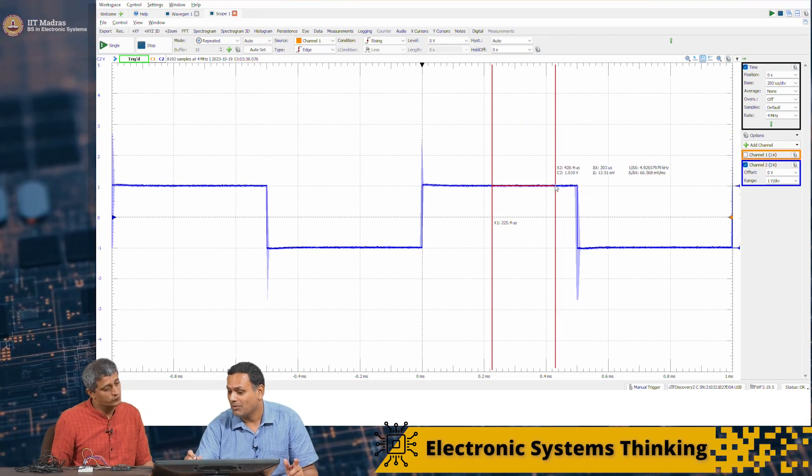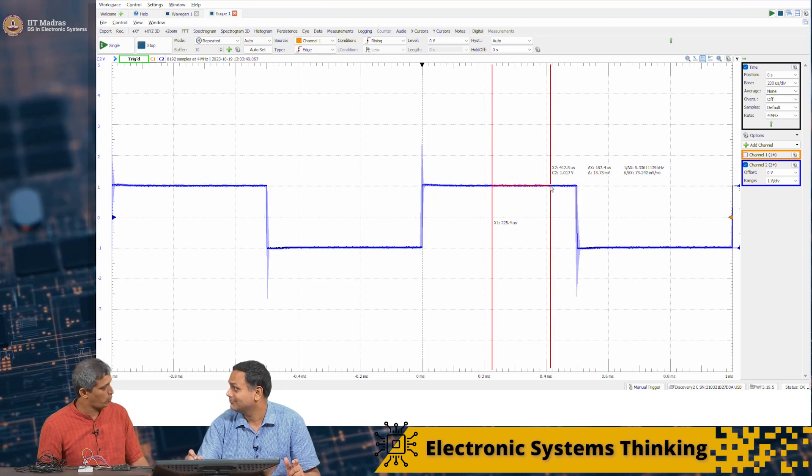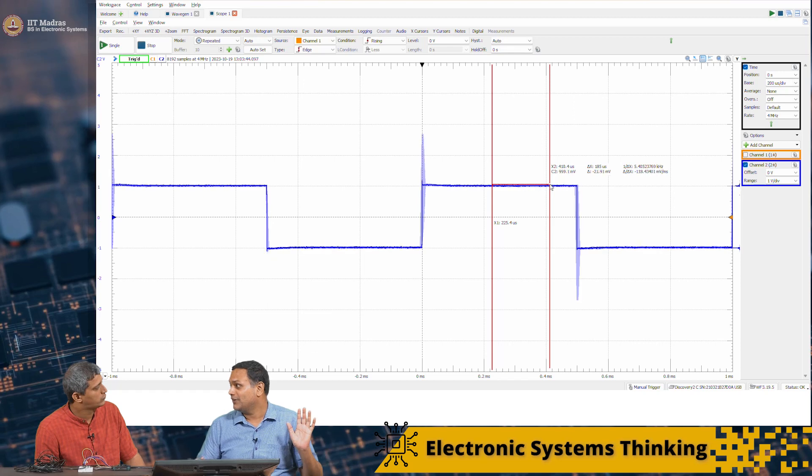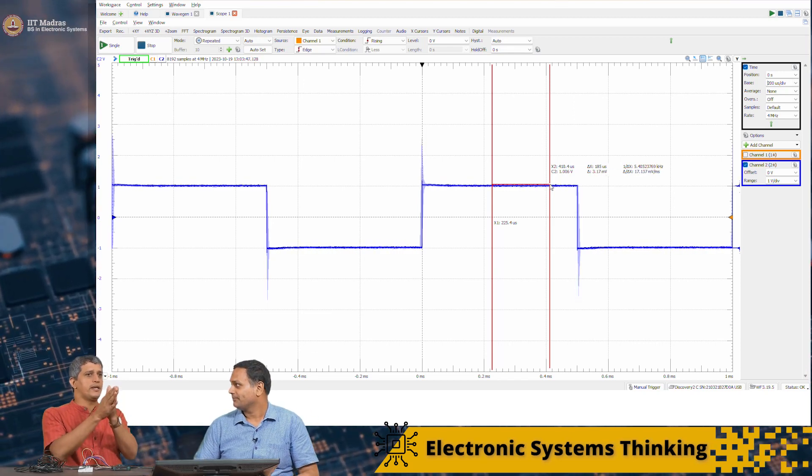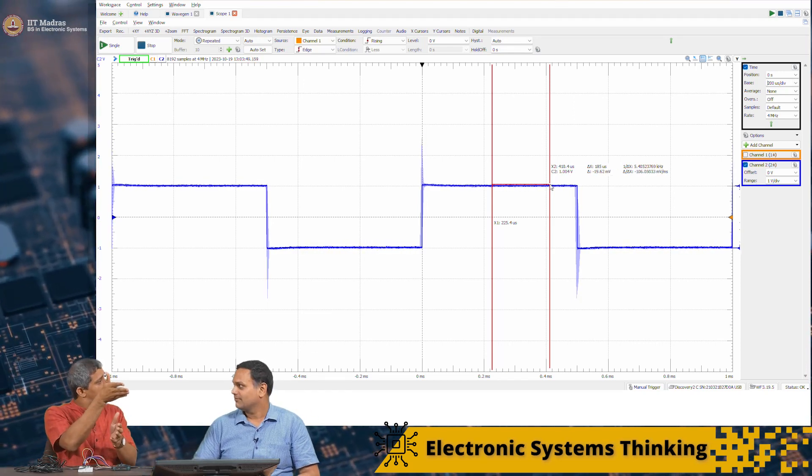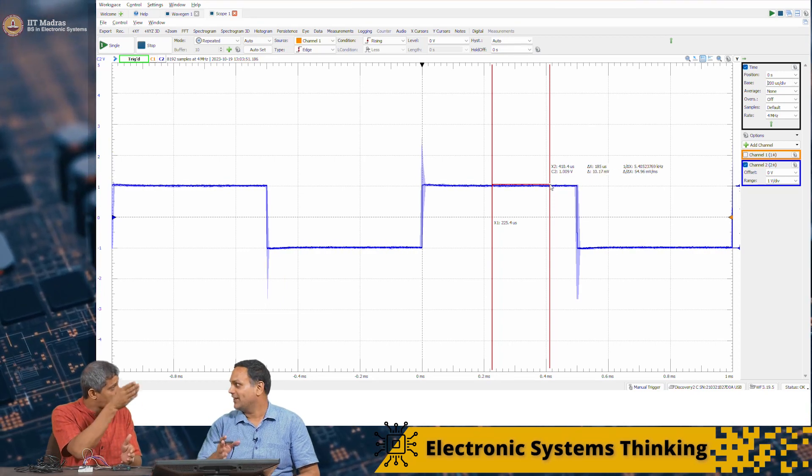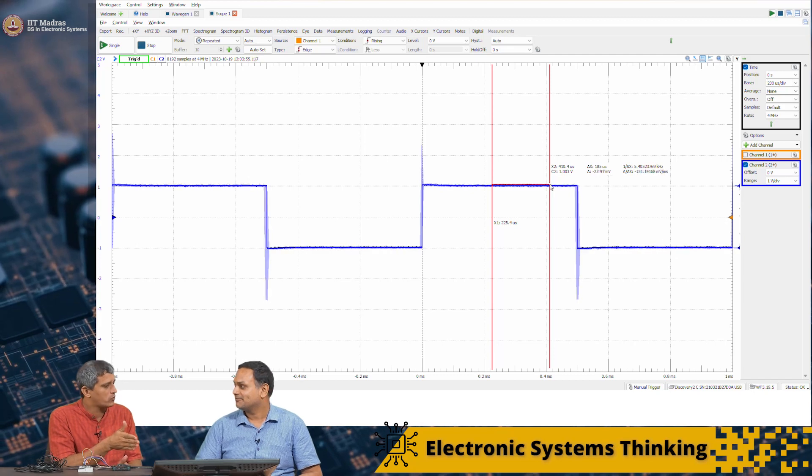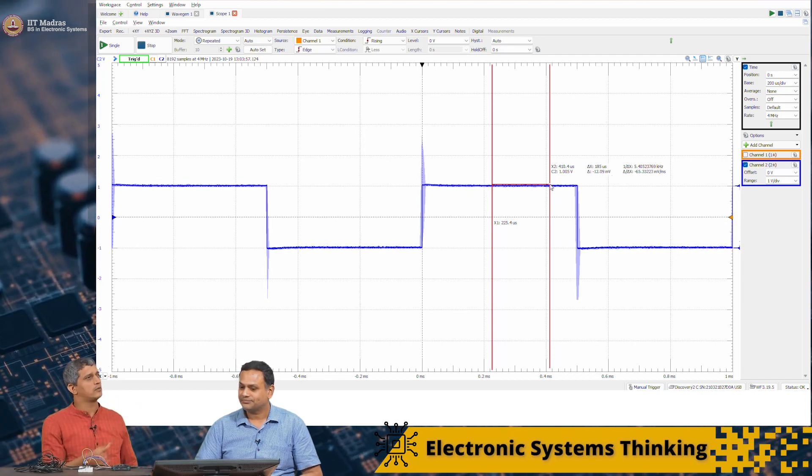Ideally I probably want to wait as long as possible before sampling the signal, so that I wait for all the ringing to settle down. Because if I sample it in the ringing part, I could get 0. I could send a 1 but you could get a 0. That is right.